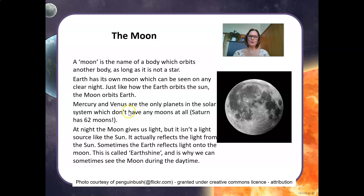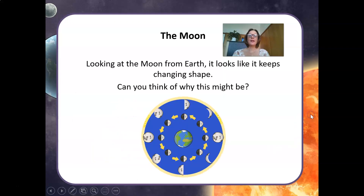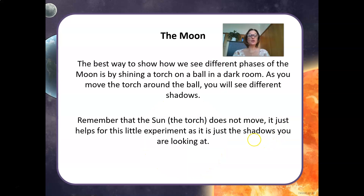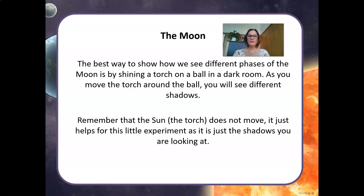That's something new! Looking at the moon from Earth, it looks like it keeps changing shape. The best way to show how we see different phases of the moon is by shining a torch on a ball in a dark room. As you move the torch around the ball, you will see different shadows. Remember that the Sun — the torch — does not move; it just helps for this experiment to show you the shadows you are looking at.